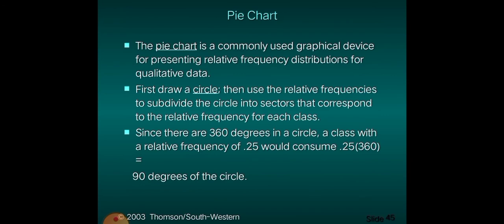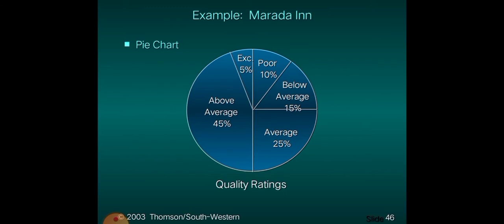Then there is the pie chart. The pie chart is a commonly used graphical device for presenting relative frequency distributions for qualitative data. First, draw a circle, then use the relative frequencies for each class. Since there are 360 degrees in a circle, a class with a relative frequency of 25% would consume 0.25 times 360, which equals 90 degrees of the circle. The pie is divided into sections using the percentage for each class.